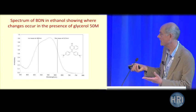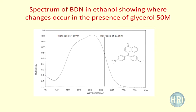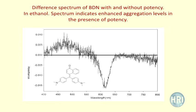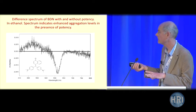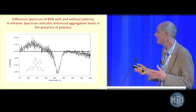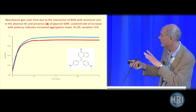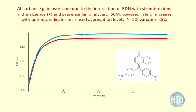The next dye is zwitterionic in the excited state, opposite to the first three. What you see is a decrease at 615 nanometres and an increase at 480. The difference spectrum shows a very sharp decrease at 615 and an increase at around 480. Because this dye is zwitterionic in the excited state, potencies are causing it to aggregate more — displaying a blue shift — which is opposite to dyes that are zwitterionic in the ground state. This is verified with strontium ions: in the presence of strontium plus potency, there's less increase in absorbance, meaning strontium ions are less able to interact because the dye is more aggregated.